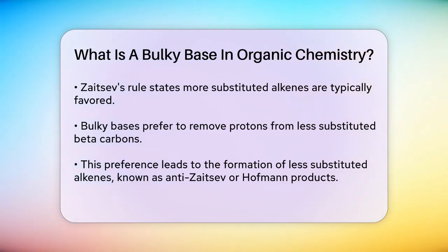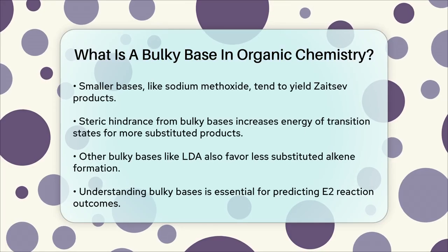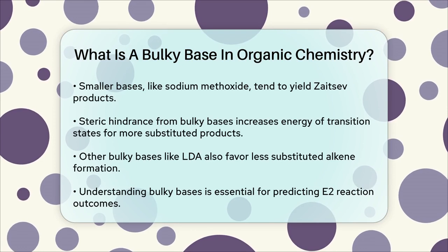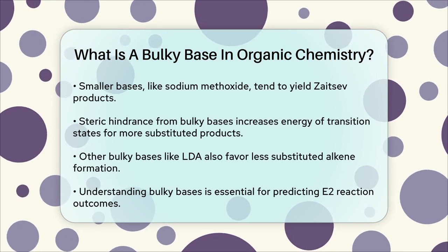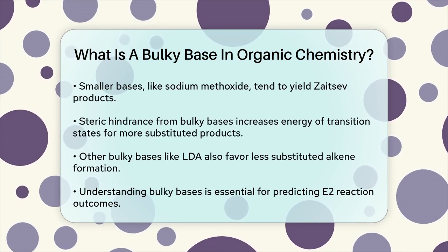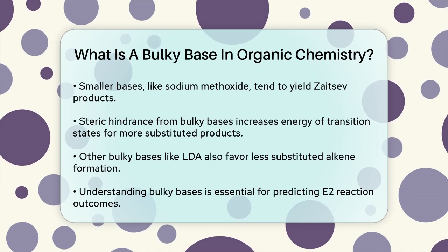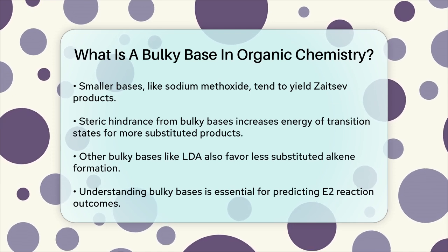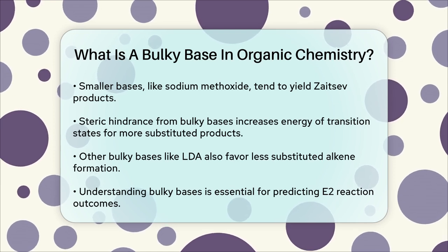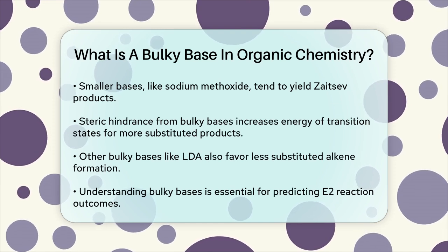This clash increases the energy of the transition state for forming the Zaitsev product, making it less favorable. Other bulky bases like LDA also behave similarly, although potassium t-butoxide is by far the most commonly used. These bases are crucial in controlling the outcome of E2 reactions, especially when you need to form specific alkenes.